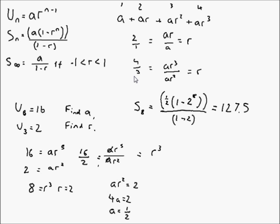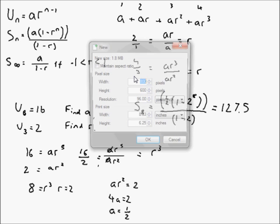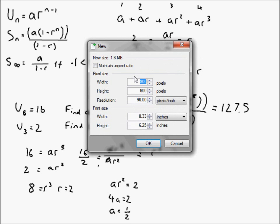But let's say we have another sequence. For a sum to infinity, let's say the first term of a sequence is 8 and the fourth term of the sequence is equal to 3.375.